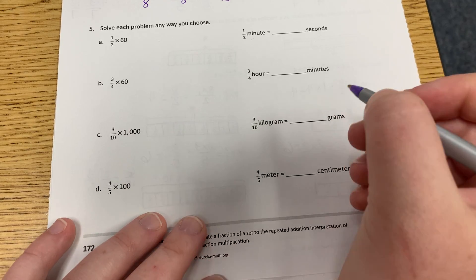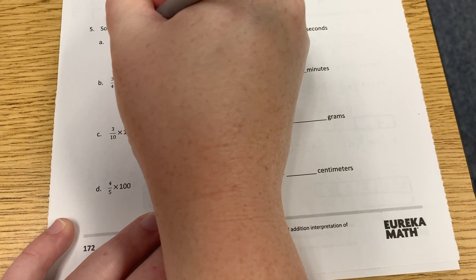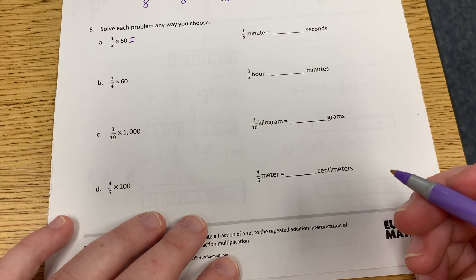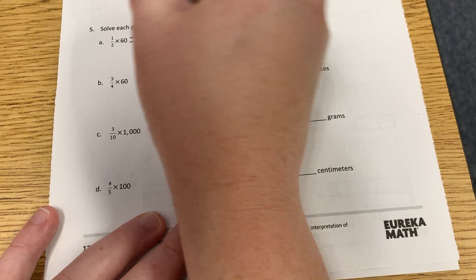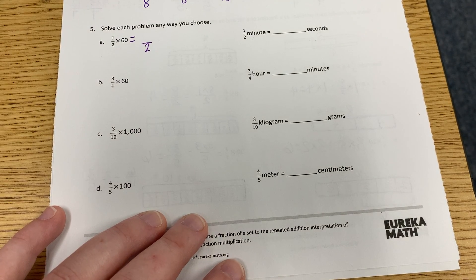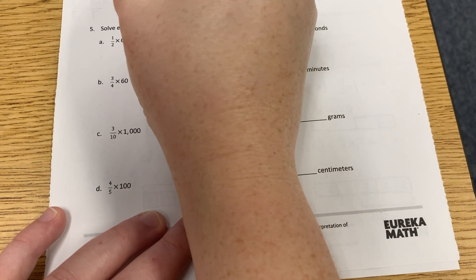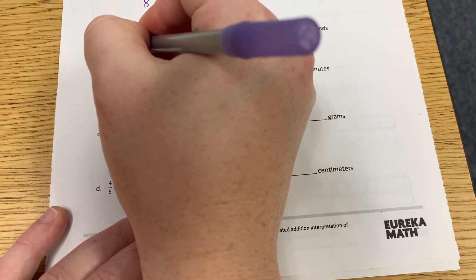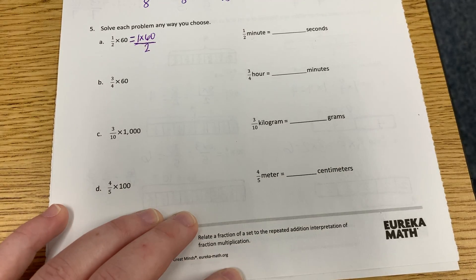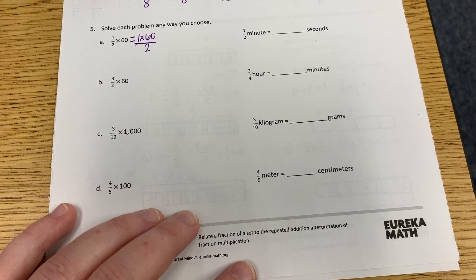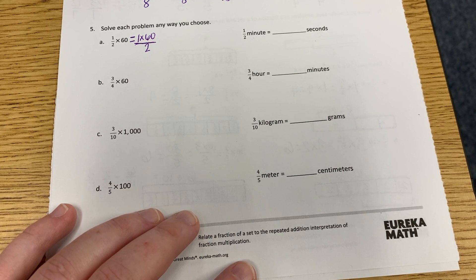So if we were to multiply, remember we keep our denominator the same, which is what? Two. So our denominator stays the same. And then we multiply the top. What is our multiplication equation for that top? Nana? One times 60. So now we have one times 60 over two. Now, could we make 60 and two smaller to make this a little easier? What could we divide 60? What would 60 divided by two be? 30.